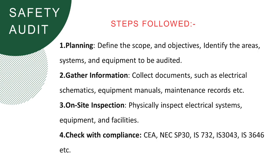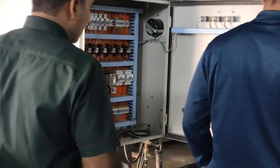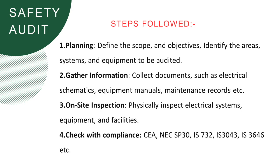The next step is on-site inspection. The auditor with a team will inspect your complete electrical system — how your electrical system is installed, whether your circuit breakers are okay, whether your distribution boxes and their circuit breakers are working properly, how your cables are routed, how your cable tray system is arranged, and whether your connections are okay or not. All these things will be checked by the team.